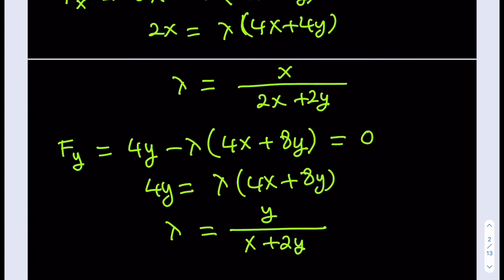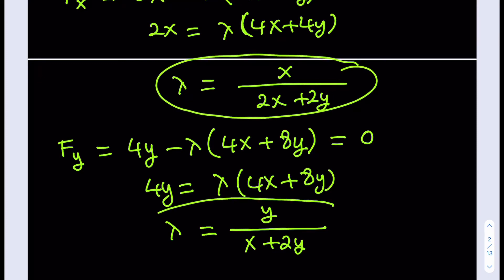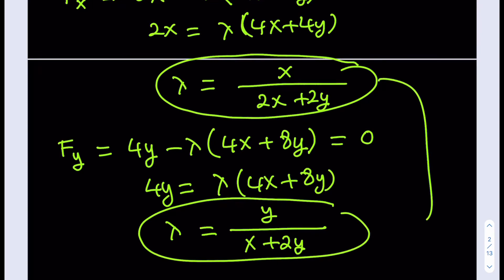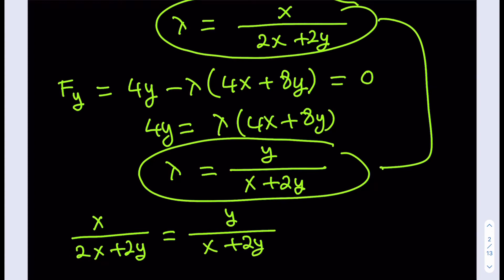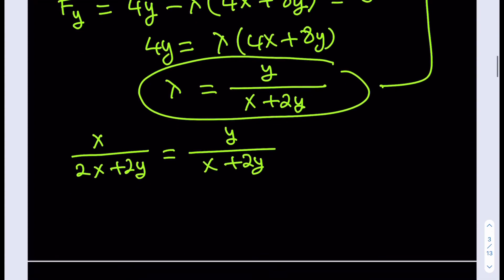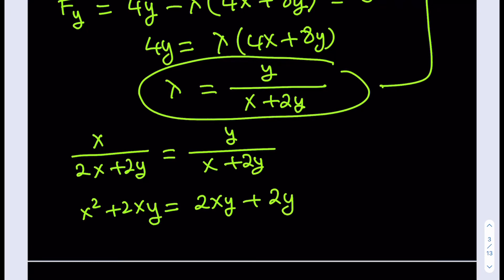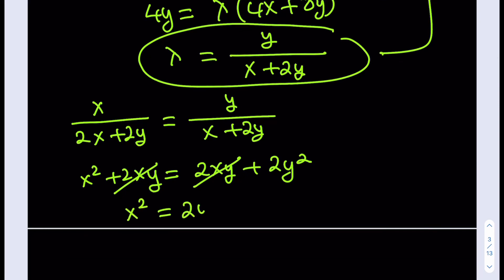From solving the system of equations — setting both expressions for lambda equal to each other — we get X divided by (2X plus 2Y) equals Y divided by (X plus 2Y). Cross-multiplying gives X squared plus 2XY equals 2XY plus 2Y squared. The 2XY terms cancel, and we arrive at X squared equals 2Y squared.